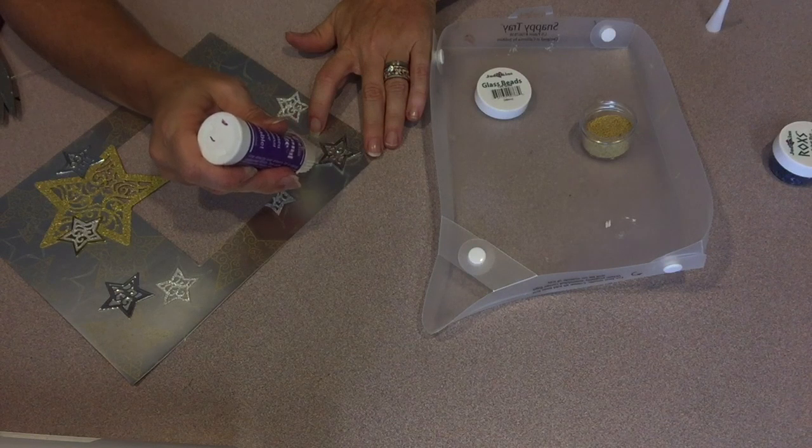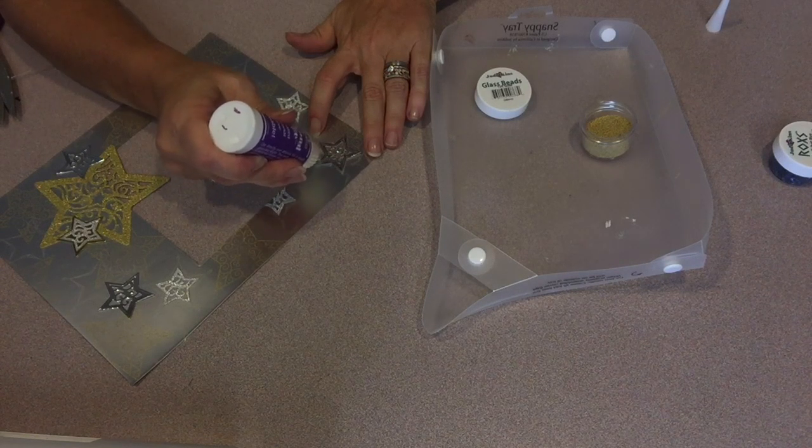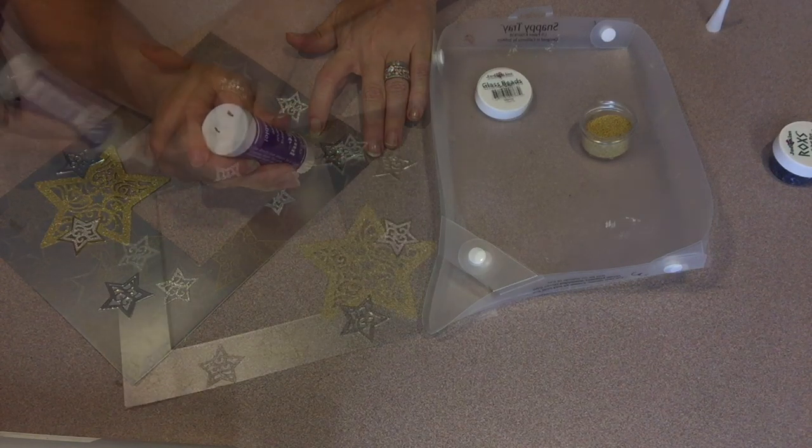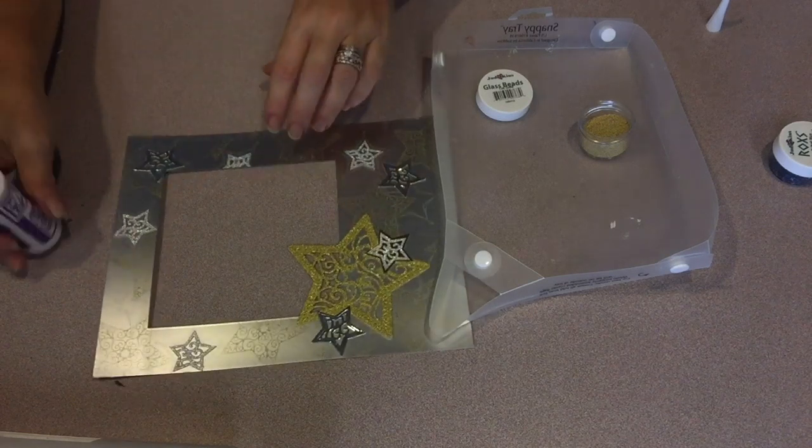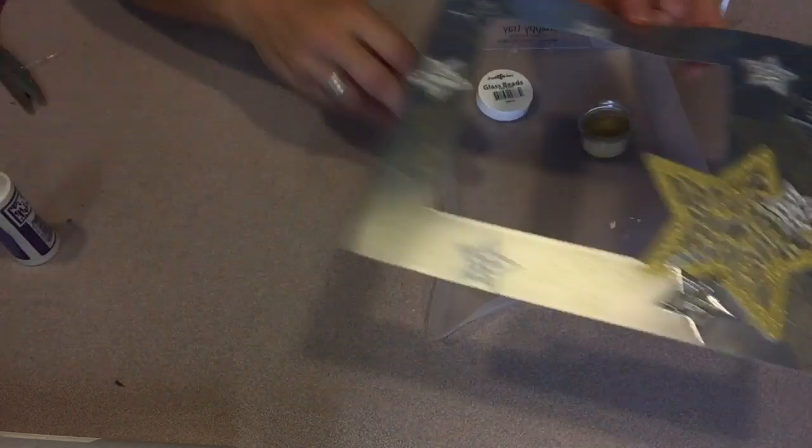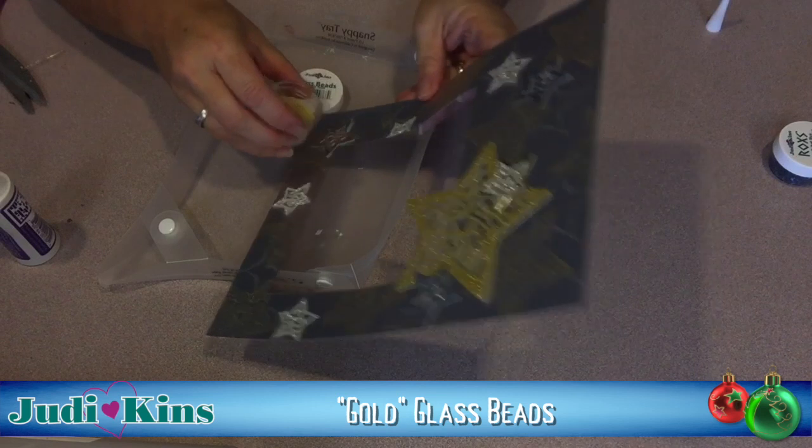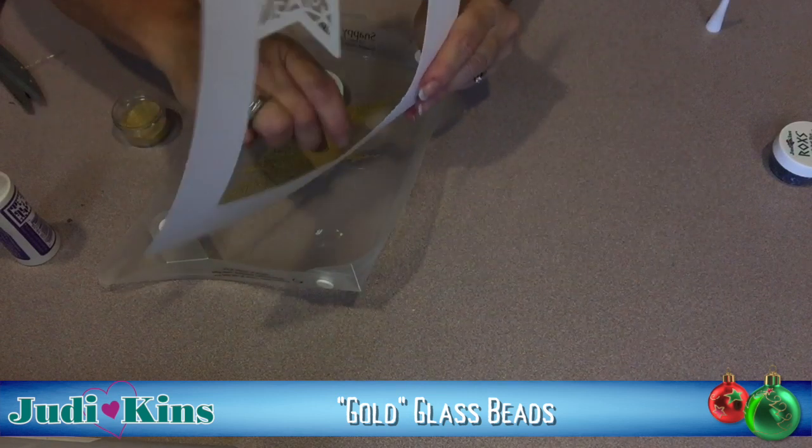And I began outlining the mirrored silver stars with Diamond Glaze. Once you have that first star outlined, it's time to add some of the tiny glass beads. And I'm using gold, and these are also from Judykins.